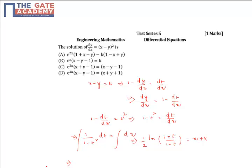This implies ln of 1 plus t by 1 minus t is equal to 2x plus some k dash, some constant.